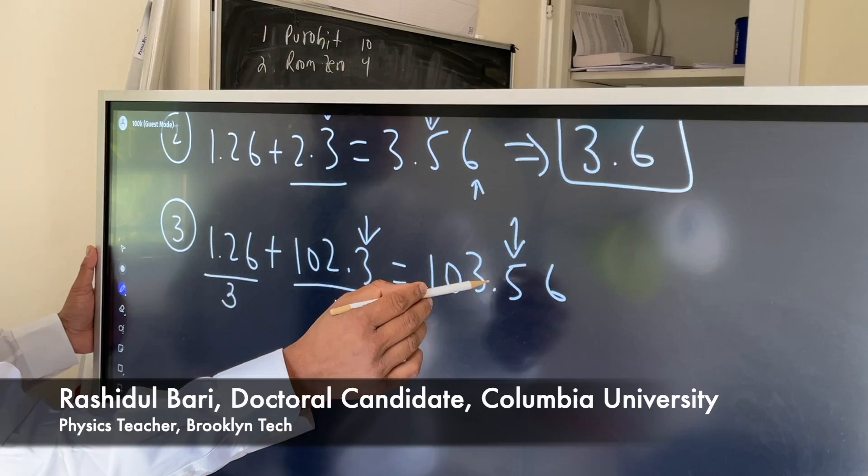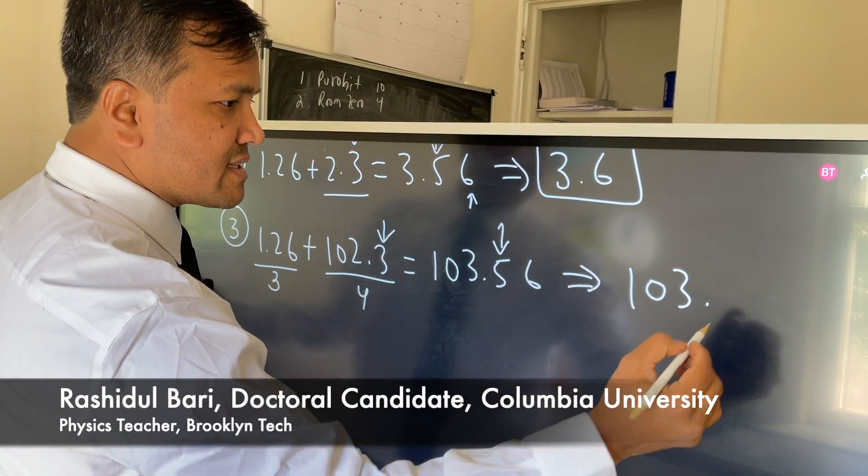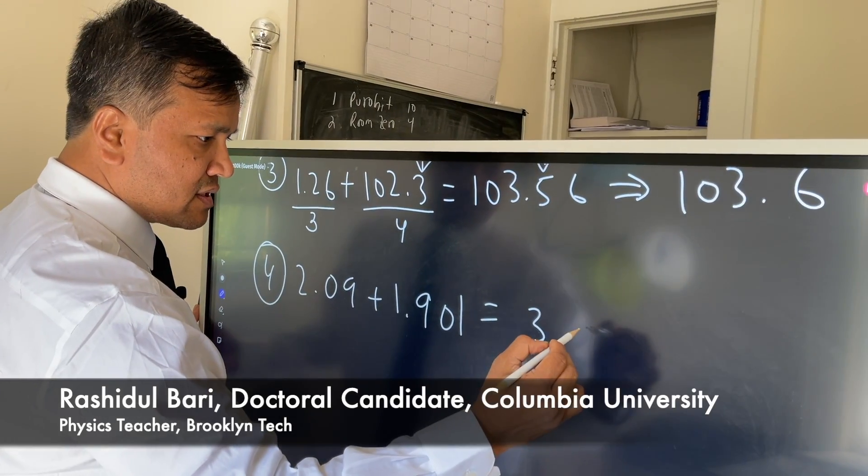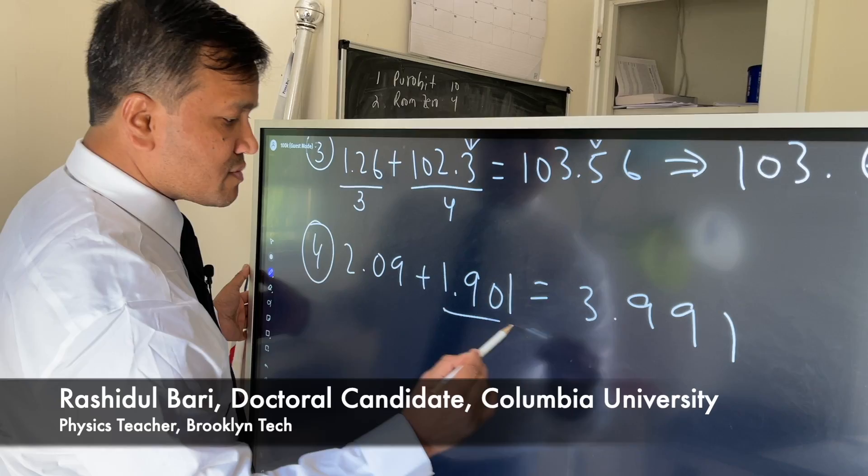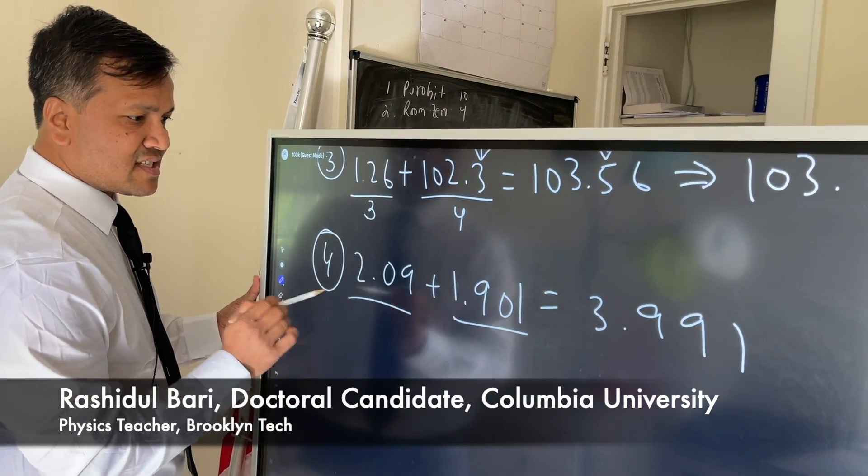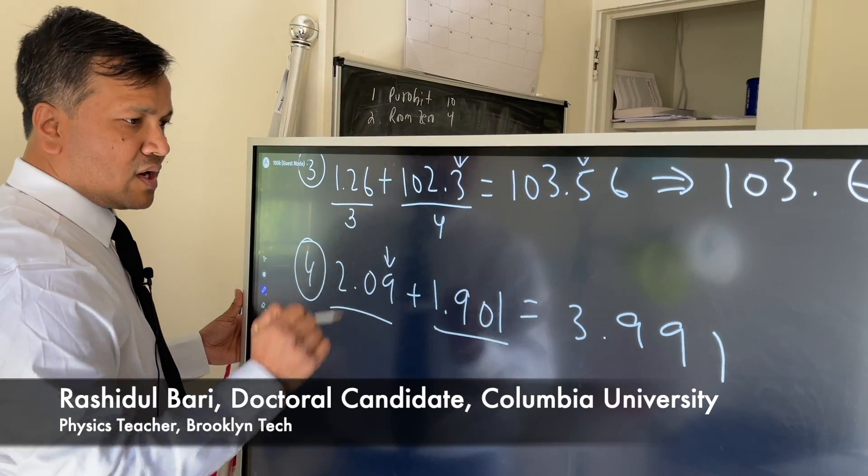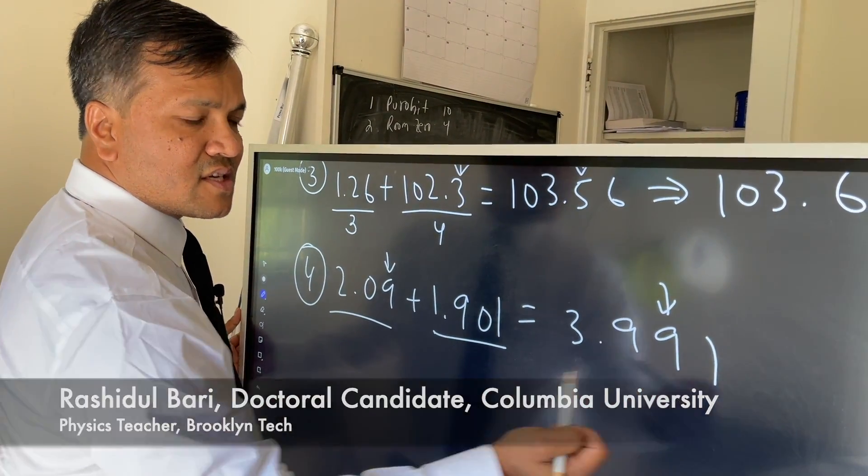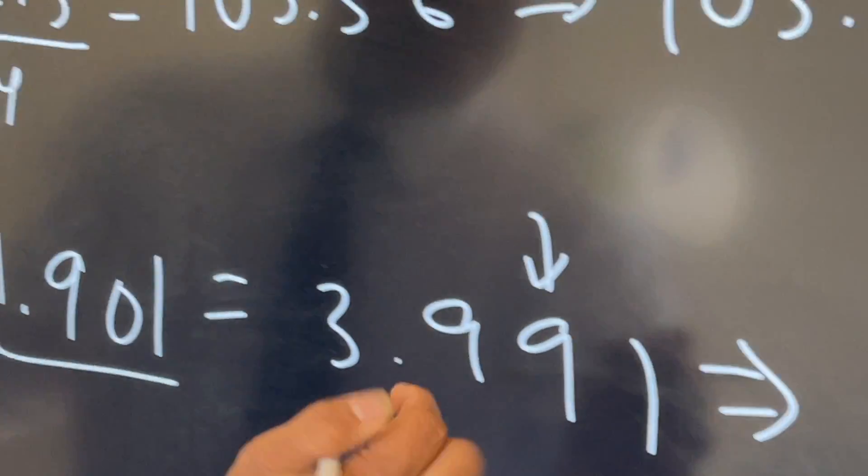0.99 - see which one is most precise. This one is most precise and this one is the least precise. So then we have to go to the hundredths, this is our target. Since this one is less than five, we're not going to add anything to this nine, so 3.99.